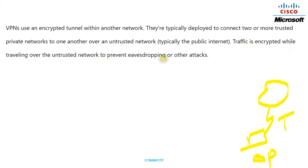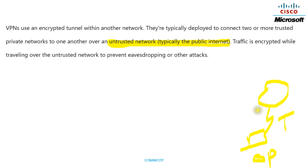Traffic is encrypted while traveling over the untrusted network to prevent any attacks. Data will be traveling through tunnels and that will be encrypted, so attacks and hacking are not possible. It will be traveling over untrusted network which is the internet, that is why it encrypts your data — your communication and information should be protected.